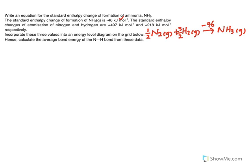Remember, standard enthalpy change of atomization means you are forming one mole of gaseous atom. For example, for nitrogen, it's actually 1/2 N2 gas gives one mole of gaseous atom N. And this is +497. And then for hydrogen, 1/2 H2 gives H gas, and this is +218.